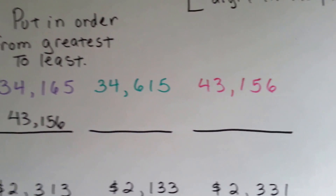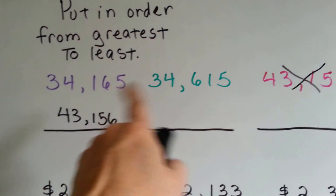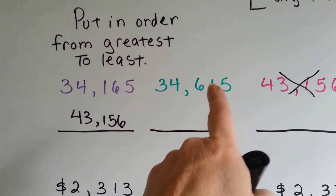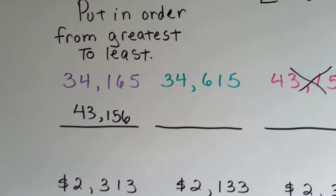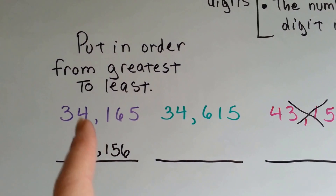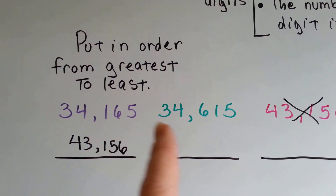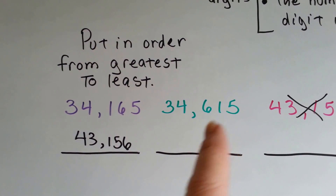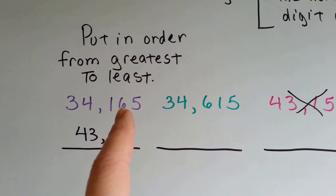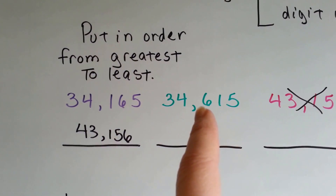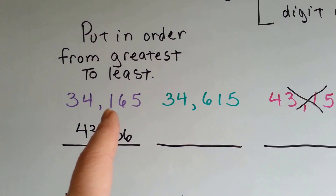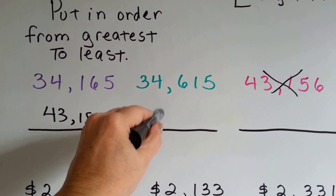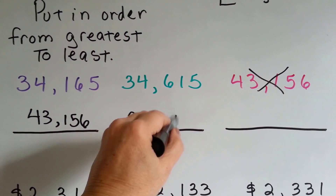Which one comes next? They have the same numbers in them and the same amount of digits in place values, but which one's bigger? Remember our rule — look for the place values to find which digit is the biggest. They both have five ones. This one has one ten; this one has six tens. That's bigger, but we need to keep looking to be sure. This one has six in the hundreds place; this one only has one. So which one's bigger? If you said this one, you're right: 34,615.